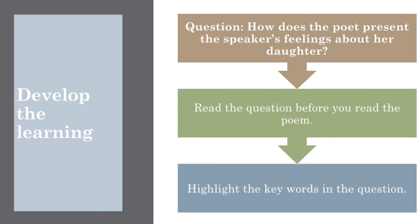It's really important to know what you're doing before you start. We already know the title of our poem. The question we're going to use this poem to answer is: how does the poet present the speaker's feelings about her daughter? I'd like you to read the question before you read the poem. The key words are: poet, present, speaker's feelings, and daughter. So we're looking at specific words and phrases that link to the speaker's feelings about her daughter.